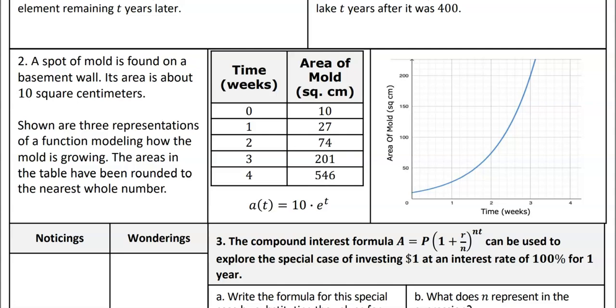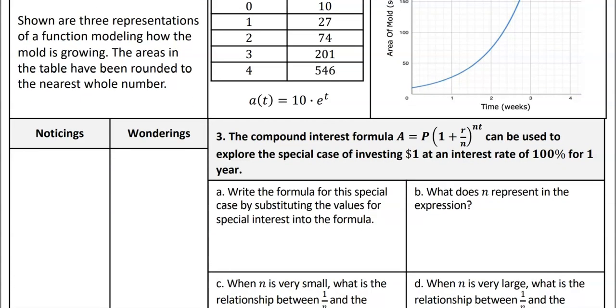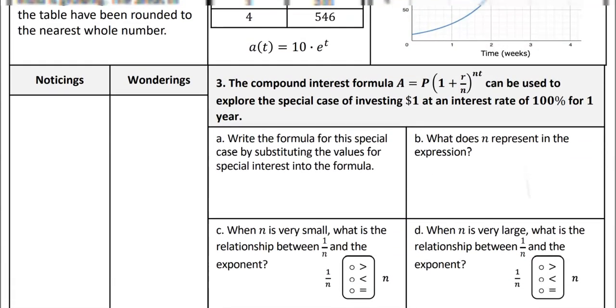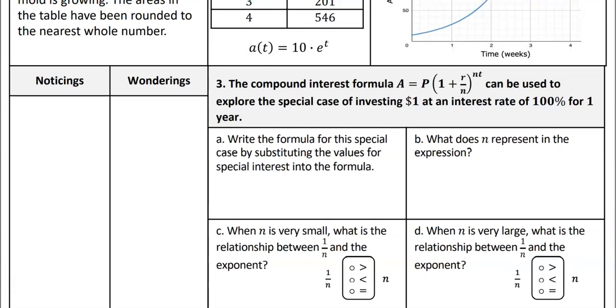E is a very real natural number that naturally occurs over time in lots of real world situations. This is one of them. It's about mold and how fast mold grows. So our spot of mold is found on a wall. Its area is about 10 square centimeters. What's being shown here is a table, a graph, and a function that represents the exact same thing about the mold growth: 10 times e to the power of t. I want you and partner to look at those three pieces and write down some noticings and some wonderings. What do you notice and what are you curious about? Talk to each other. Ready, set, go.